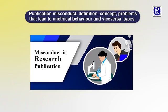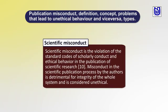This unit introduces students to the philosophical need for ethics, starting from a brief discussion of moral law and how the human person in their process of growth adopts ethical principles. Scientific misconduct is the violation of the standard course of scholarly conduct and ethical behavior in the publication of scientific research. Misconduct in the scientific publication process by the author is detrimental to the integrity of the whole system and is considered unethical.